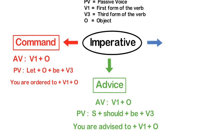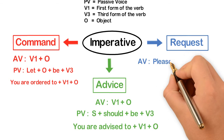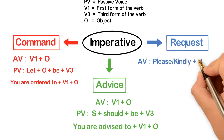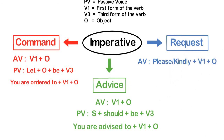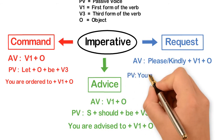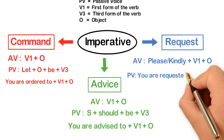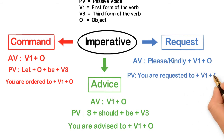For imperative sentences expressing a request, the structure of active voice is: 'Please' or 'Kindly' + first form of the verb + object. Converting it to passive, the structure becomes: 'You are requested to' + first form of the verb + object.